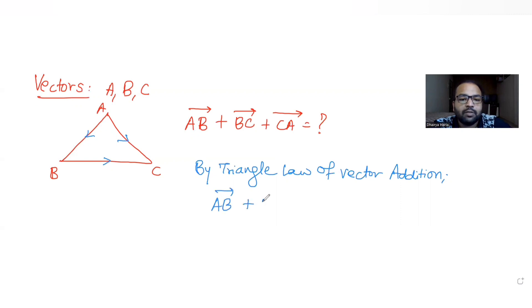So AB vector plus BC vector is equal to AC vector. Now when I have these vectors with us, I need to find CA vector on the left-hand side, so I need to add here CA vector.